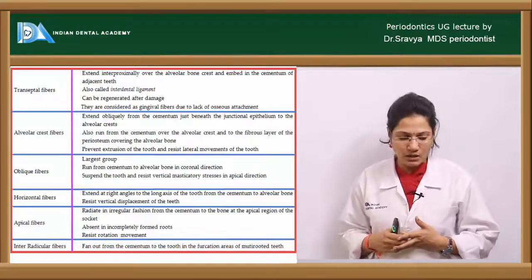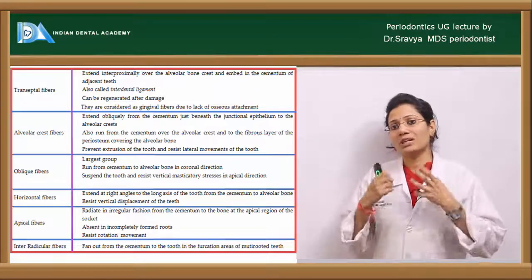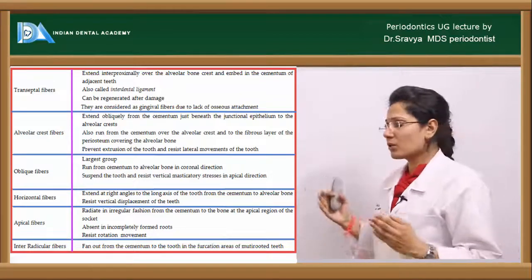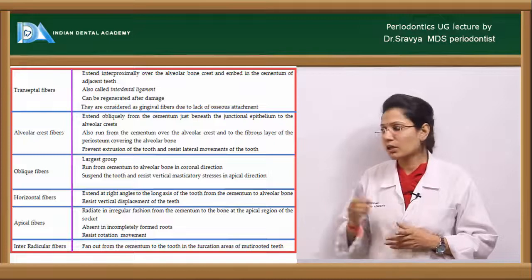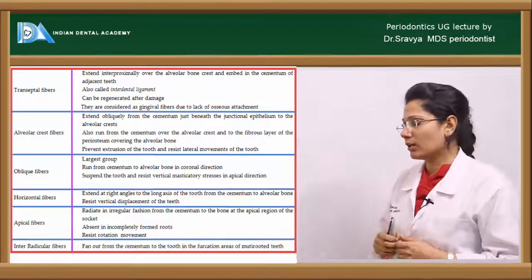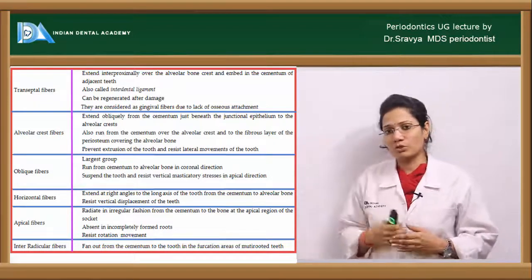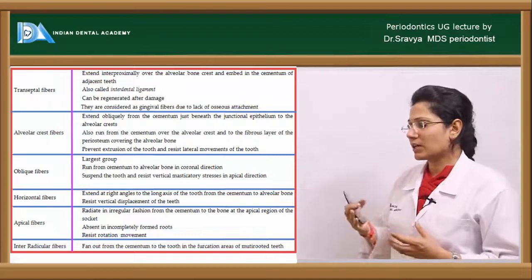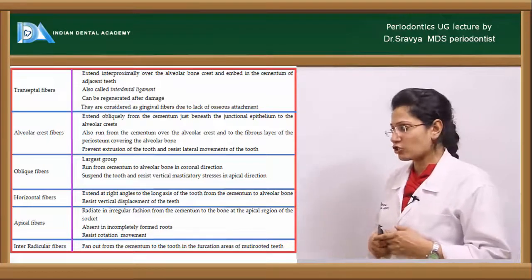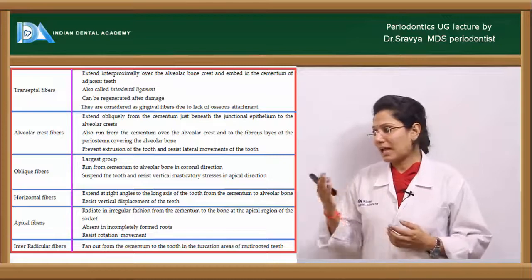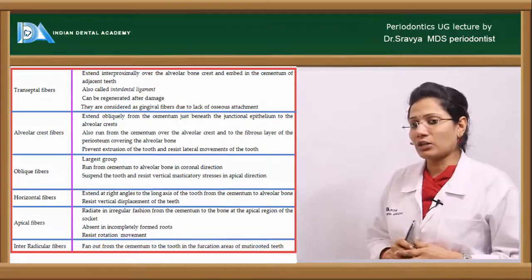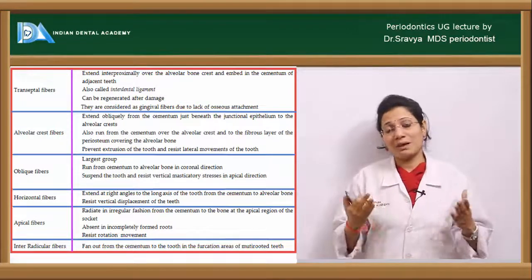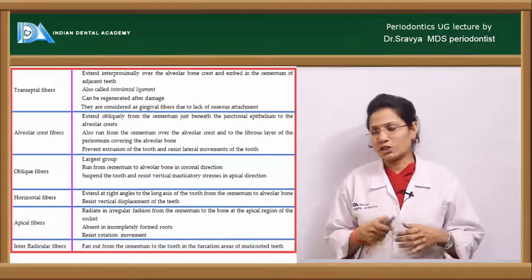The oblique fibers are the largest group and take in the maximum amount of occlusal load. The horizontal fibers extend at right angles to the long axis of the tooth, extending from the cementum to the alveolar bone, and they resist vertical displacement of the teeth. The apical fibers radiate in an irregular fashion from the cementum to the bone in the apical area. The interradicular fibers are present between radicular surfaces, especially in multi-rooted teeth at trifurcation or bifurcation areas.